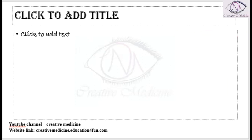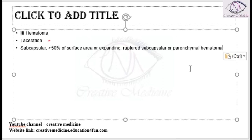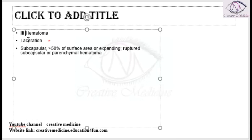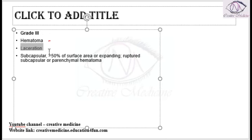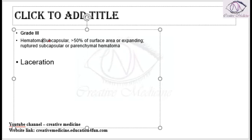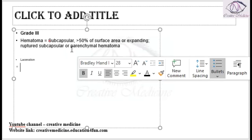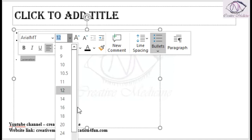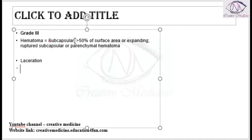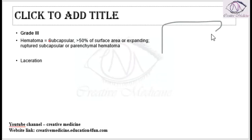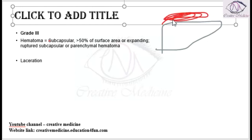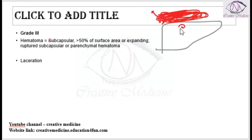In Grade 3, we have a subcapsular hematoma which is present in more than 50% of surface area and it is expanding. There is also a ruptured subcapsular and parenchymal hematoma — a hematoma in the parenchyma or subcapsular region that has ruptured, resulting in active bleeding.